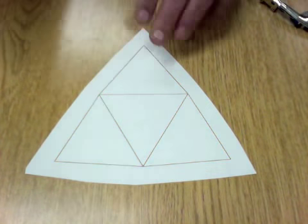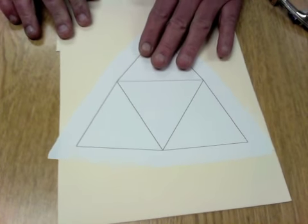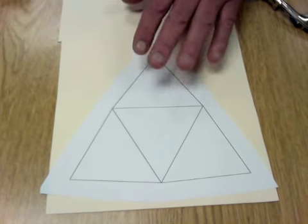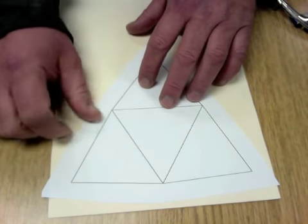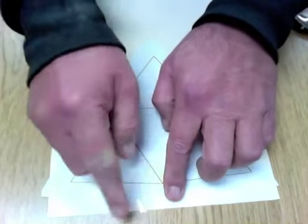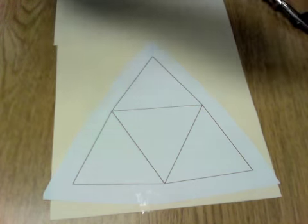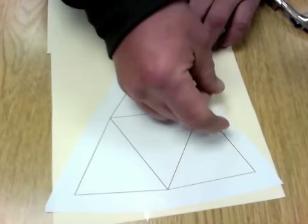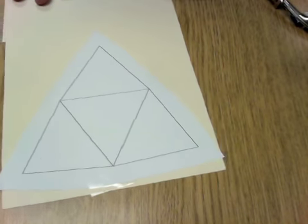Now take that piece, put it on a piece of file folder material and tape it down so it doesn't move. Just put a little piece of tape on each of the three sides like that. So now it's on that file folder.